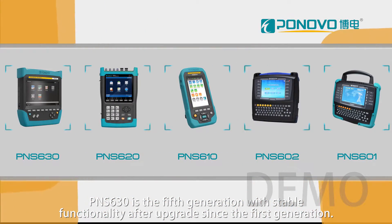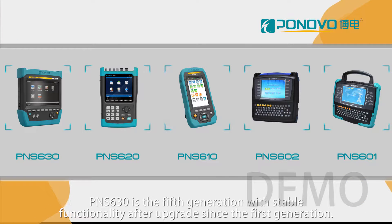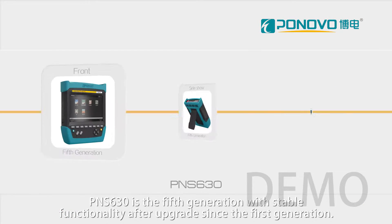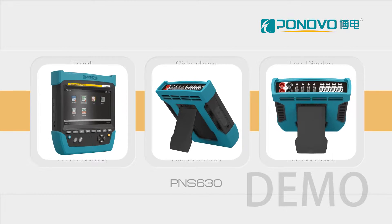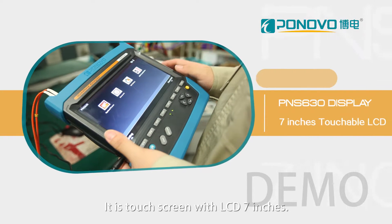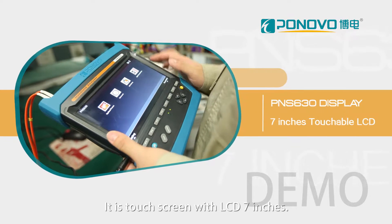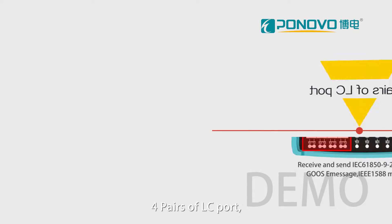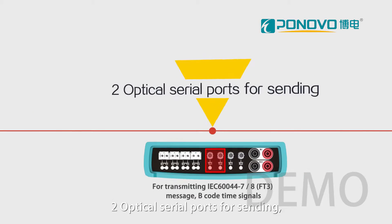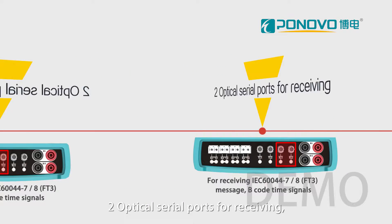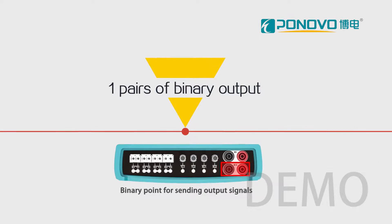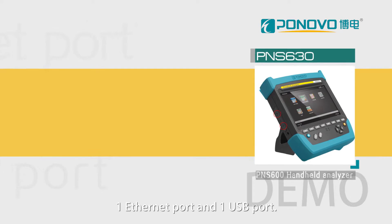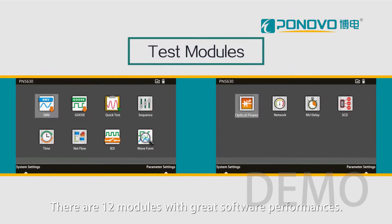The PN630 is the fifth generation with stable functionality after upgrades since the first generation. It features a 7-inch LCD touch screen, two pairs of LC ports, two optical serial ports for sending, two optical serial ports for receiving, one pair of binary input and binary output, one Ethernet port, and one USB port. There are twin modules with great software performance.